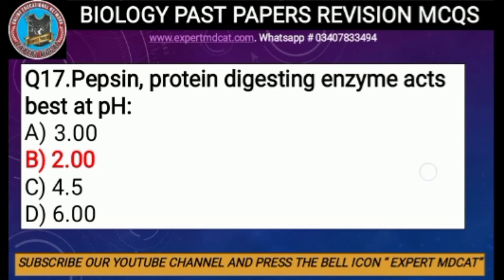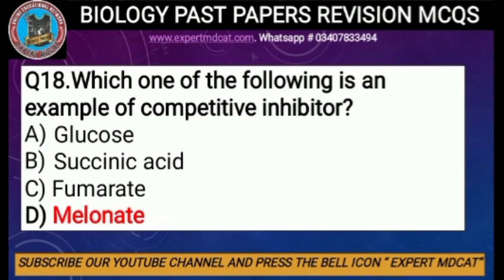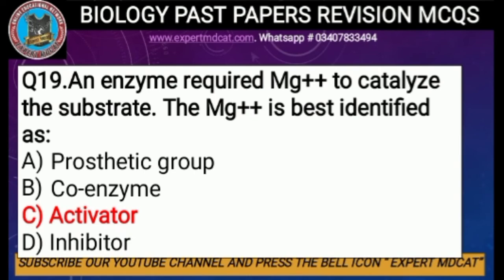Question number eighteen: which one of the following is an example of a competitive inhibitor? The answer is malonate, which is a classic example of a competitive inhibitor. Question number nineteen: an enzyme that requires a magnesium ion (Mg2+) to catalyze the substrate — the magnesium ion is best identified as an activator, since it is an inorganic cofactor.